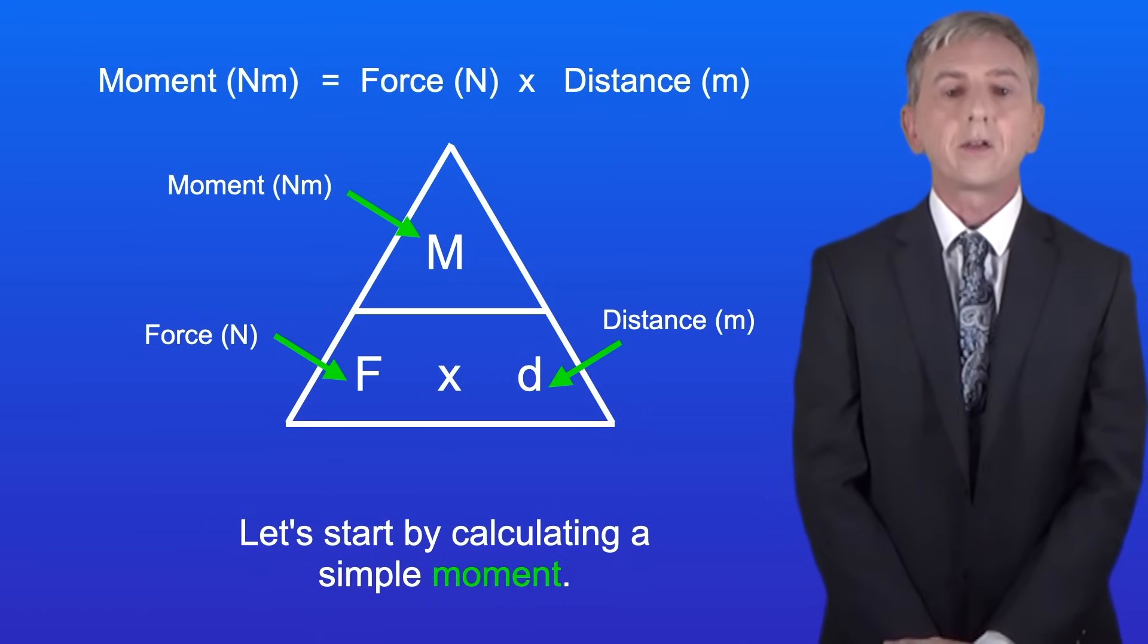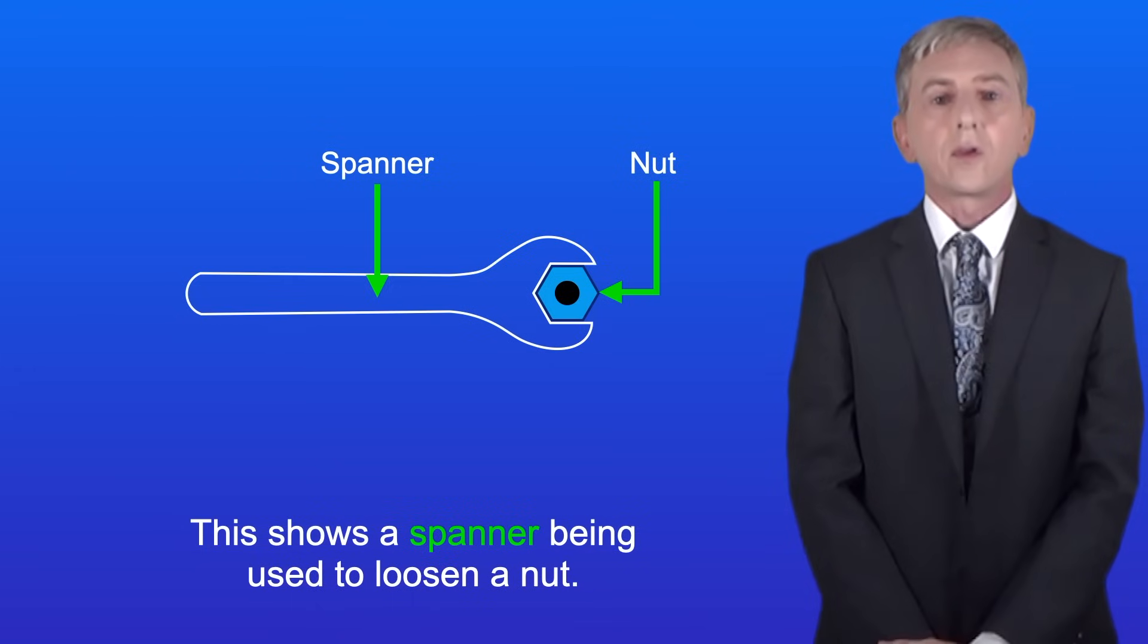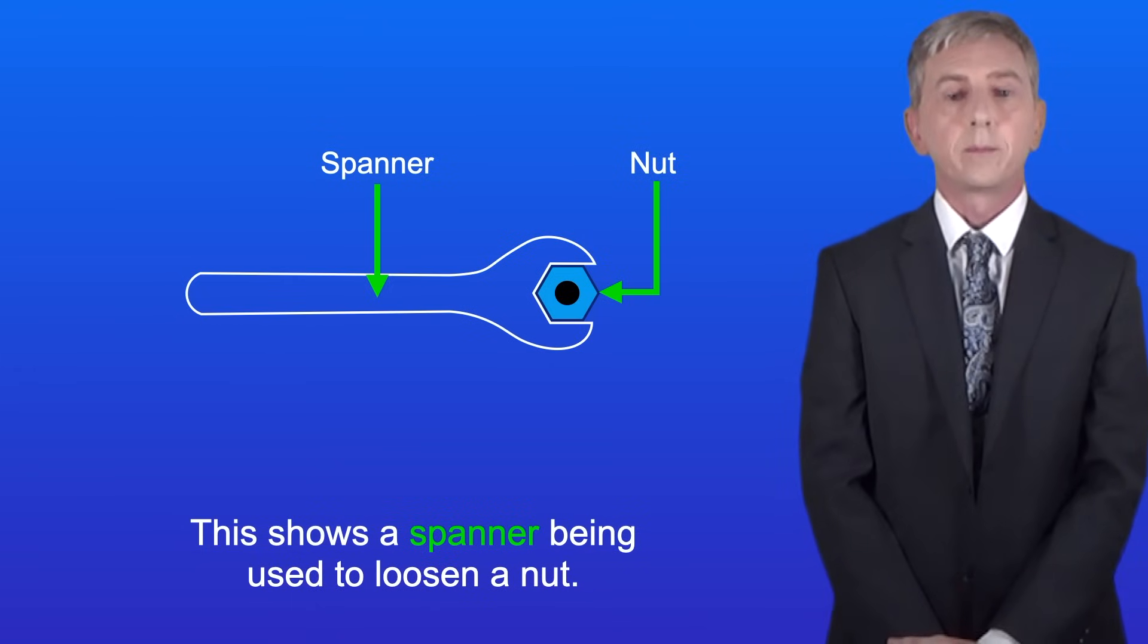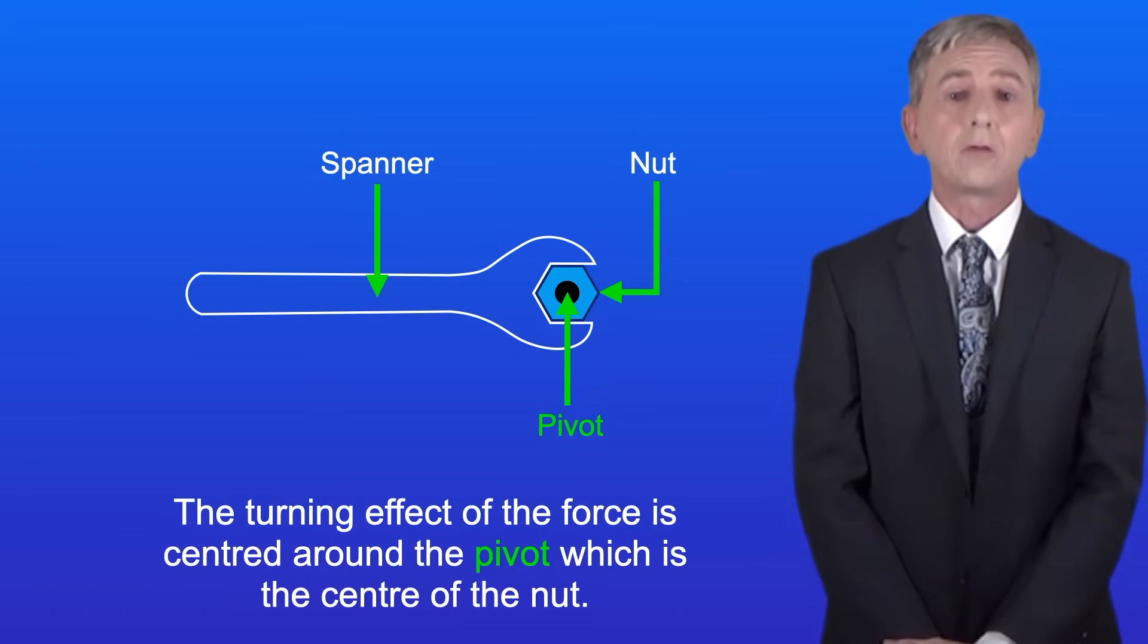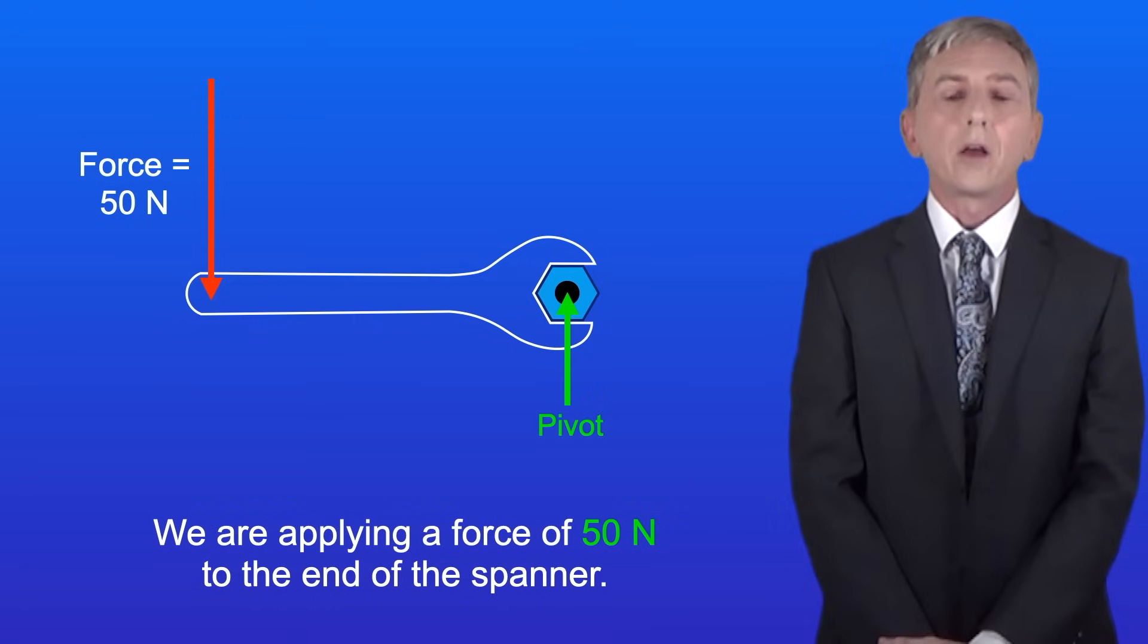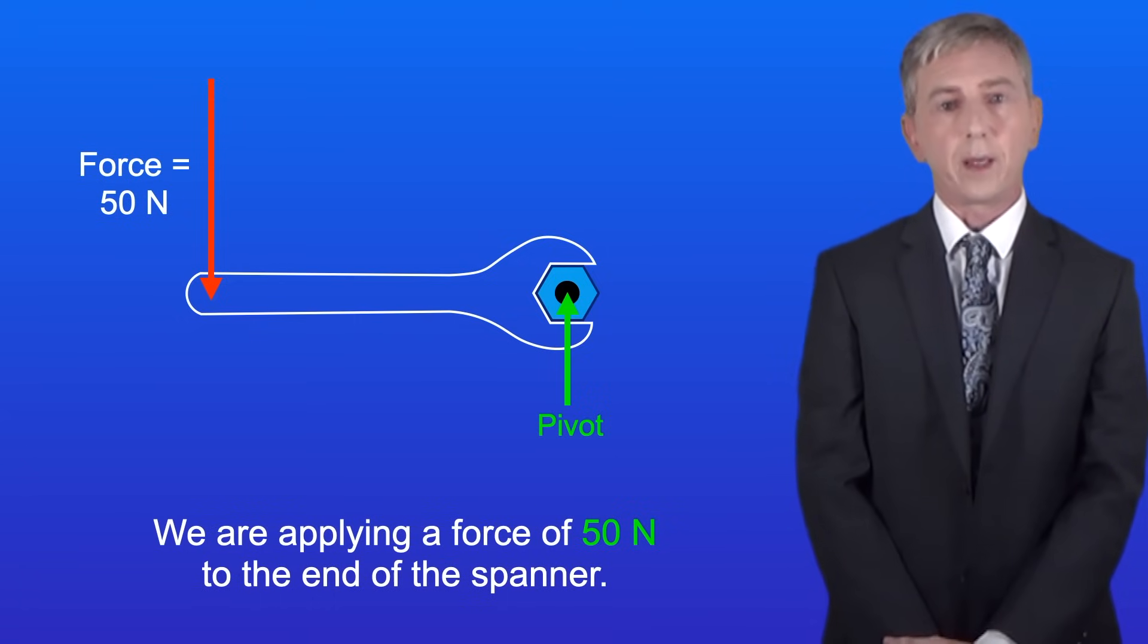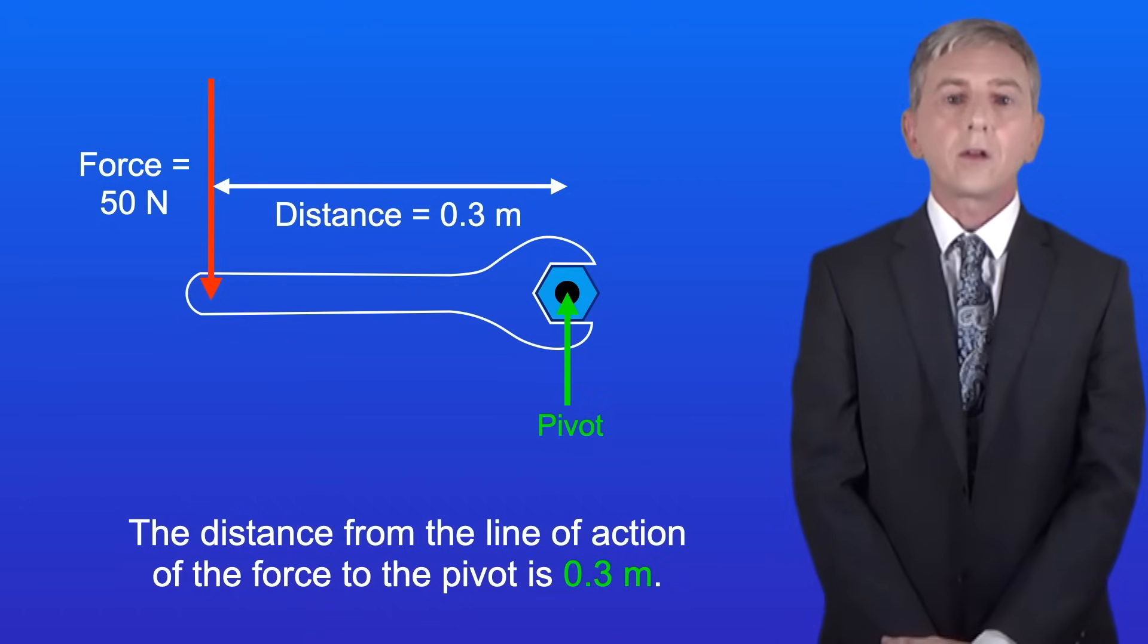So let's start by calculating a simple moment. This shows a spanner being used to loosen a nut. The turning effect of the force is centered around the pivot which is the center of the nut. We're applying a force of 50 newtons to the end of the spanner. The distance from the line of action of the force to the pivot is 0.3 meters.